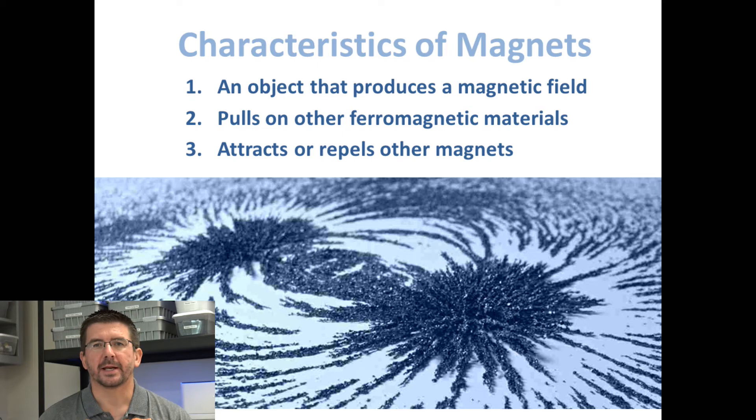The first characteristic is that every magnet has to have a magnetic field. It has to produce its own magnetic field, and this is where that force of attraction, that pulling force, comes from. We'll be looking at how we can see magnetic fields and test the strength of magnetic fields in one of our lessons coming up soon.